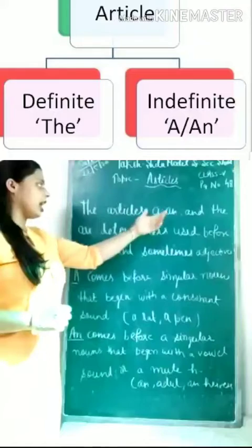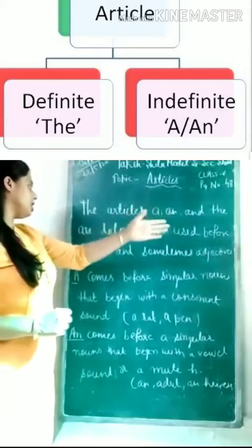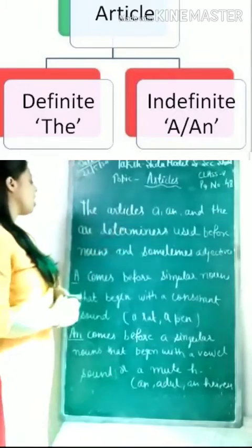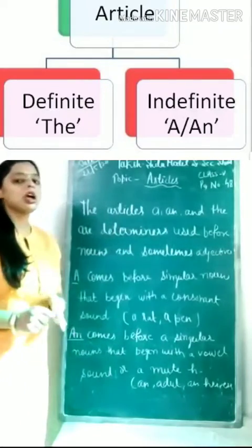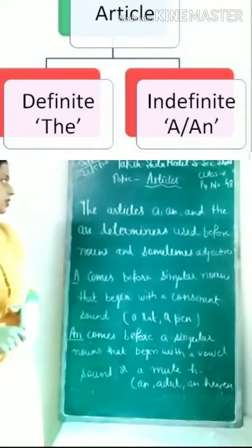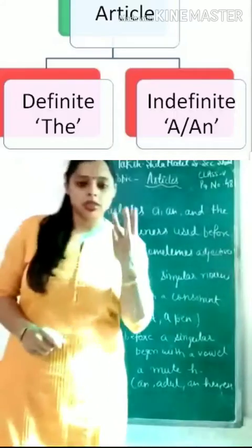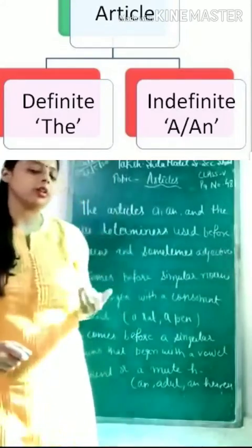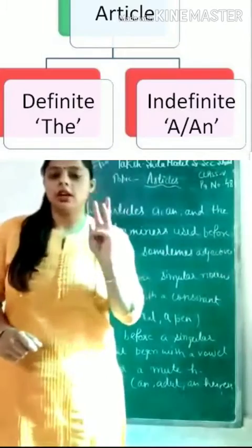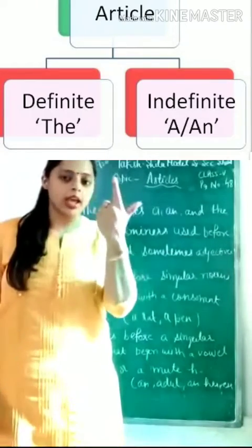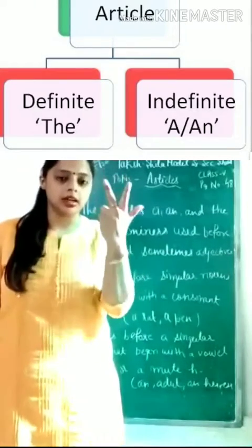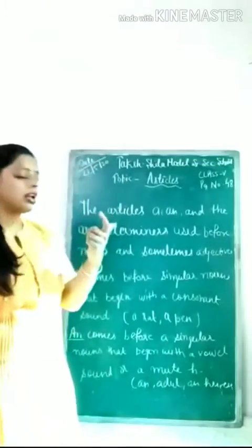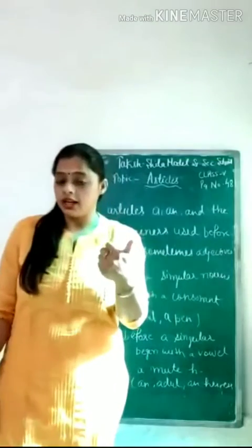A, An, and The are determiners used before nouns and sometimes adjectives. We have three articles in our grammar. How many articles are there? Three. A, An, and The. A and An are indefinite articles.